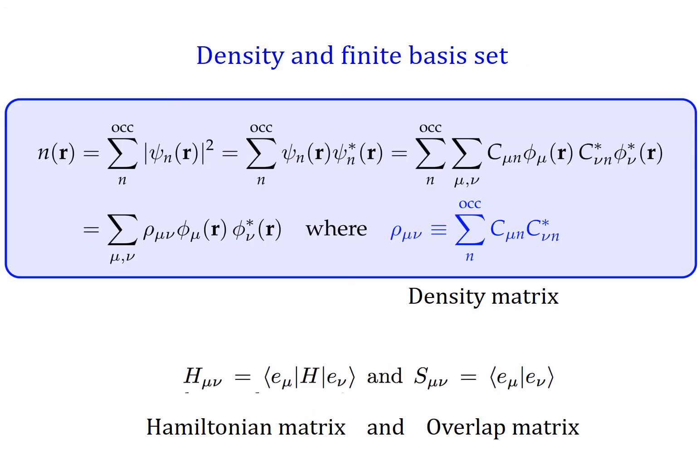Before we get into basis sets themselves, let us express the particle density, which is a key quantity in density functional theory when we are working with a linear combination of orbitals. The particle density is expressed as the sum of the squares of the occupied Kohn-Sham eigenstates. By introducing the expansion from before, we can get the expression of density in terms of the density matrix, shown in blue.